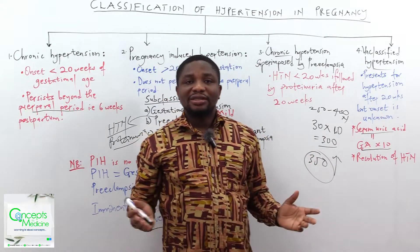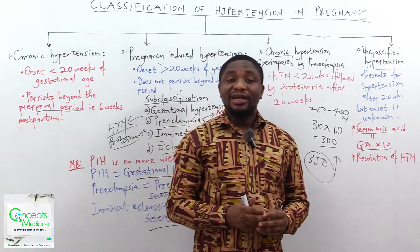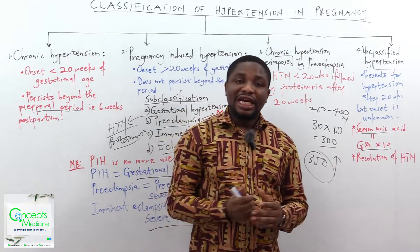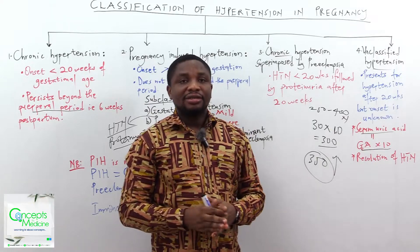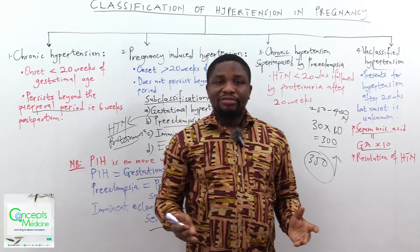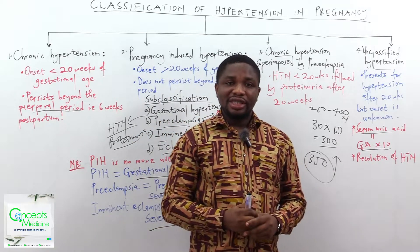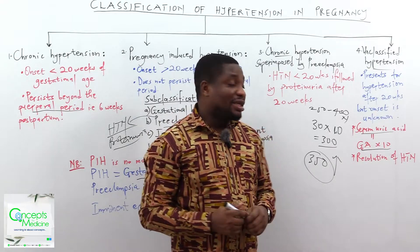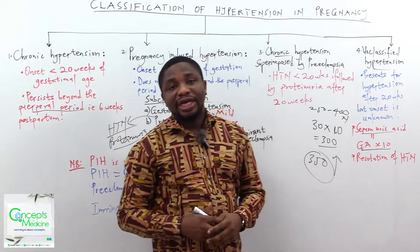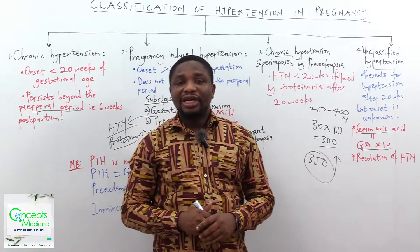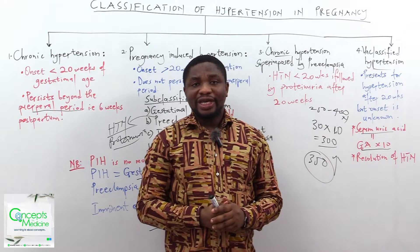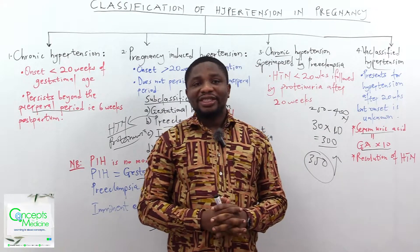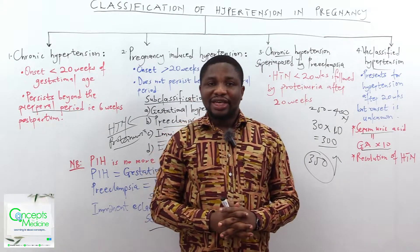The second option is to wait until delivery of the baby. If the hypertension persists beyond the puerperal period, it is chronic hypertension. If it resolves within the puerperal period, then we are talking about preeclampsia. This brings us to the end of the classification of hypertension in pregnancy.